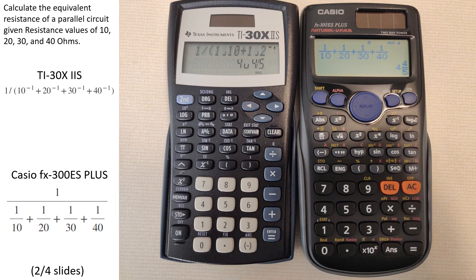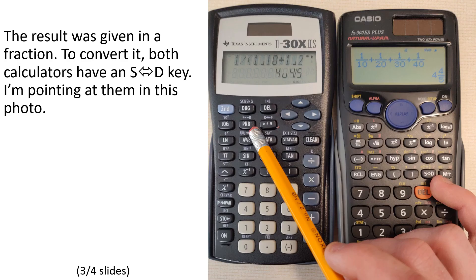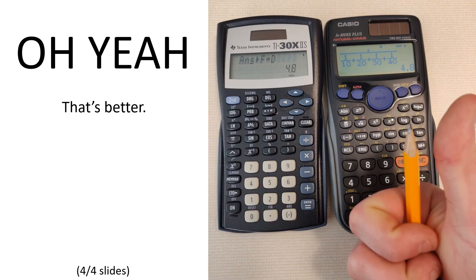The result was given in a fraction. To convert it, both calculators have an S to D conversion key. I'm pointing at them in this photo. That's better. Notice how on the Casio calculator, the formula has been kept on screen, while the Texas Instruments calculator had to start a new line in order to do the conversion.